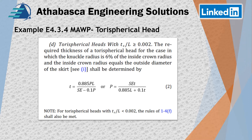Now we'll look a little more closely at the torospherical head and the definition pulled right from Part D about how to calculate the thickness. There are some conditions — for example, the thickness over L has to be greater than 0.002. The required thickness of the torospherical head for the case where the knuckle radius is 6% of the inside crown radius, and the inside radius equals the outside diameter of the skirt. You can calculate this in terms of thickness or in terms of pressure.